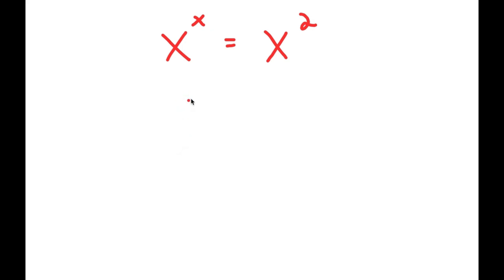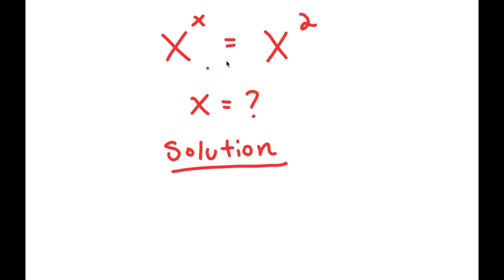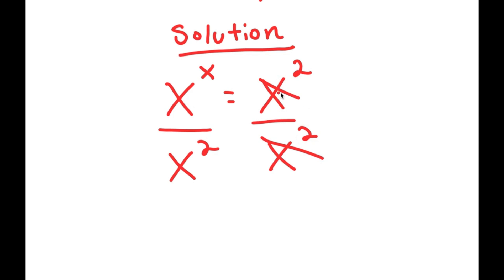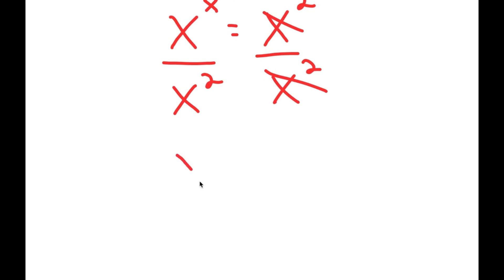Now I'm going to be solving the equation x to the power of x is equal to x to the power of 2. My only variable in this equation is x, so that's obviously the variable I'm solving for. I'm going to first write my equation down: x to the power of x equals x to the power of 2. I'm going to start by dividing both sides by x to the power of 2, so I have x to the power of x over x to the power of 2 is equal to 1, since x squared over x squared cancels out.